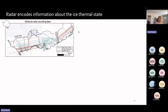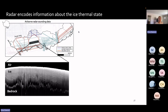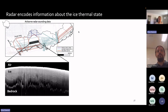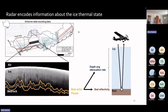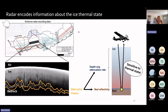Here are the airborne radar sounding data in this area, coming from three different radar systems. The main goal is to extract information about the thermal state and how radar encodes this information. Here is an example radargram segment with the bed echo power highlighted, which you can visually pick out as the peak power. This received power is a function of the depth-averaged attenuation and the bed reflectivity — how much the signal attenuates through the ice and how much is reflected off the bed.